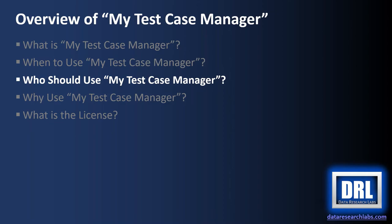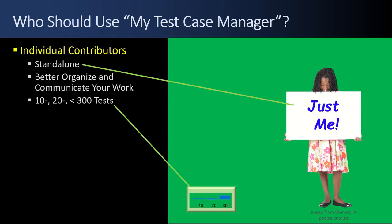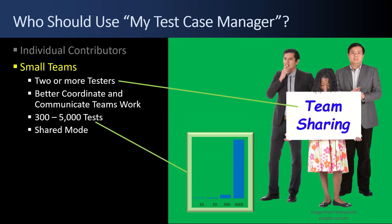Next up, who should use MyTestCaseManager? As the 'My' in MyTestCaseManager implies, this tool was really designed with a focus on the individual contributor — set in standalone mode, running on your PC or laptop. You use it to better organize and communicate your work to those around you, primarily in the 10 to 300 test case range. However, small teams with two or more testers can use the tool fine. You can use it to better coordinate and communicate the team's work by putting the Excel file in shared mode and using 300 to 5,000 test cases.